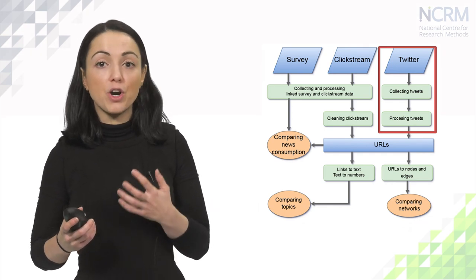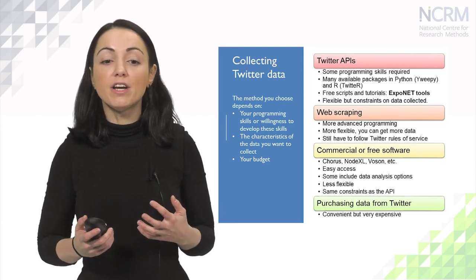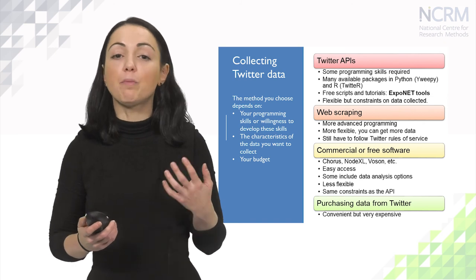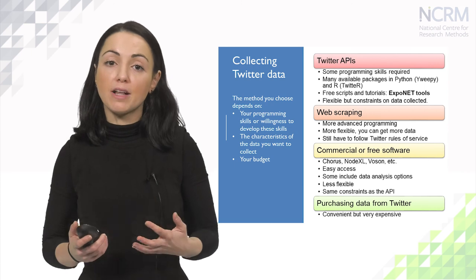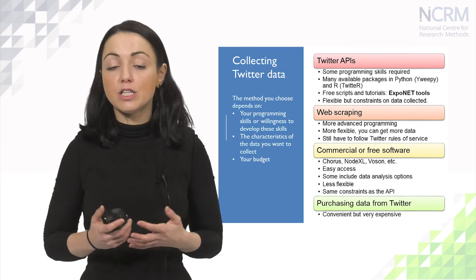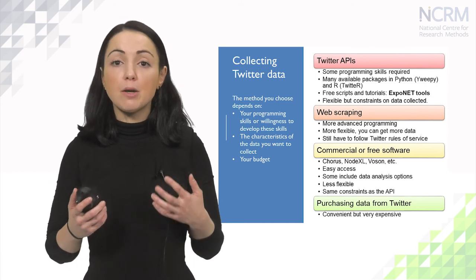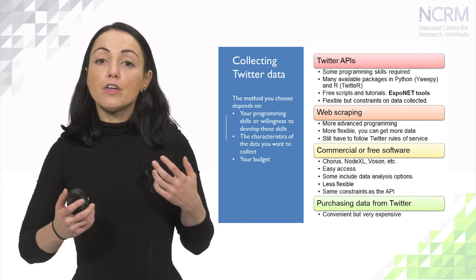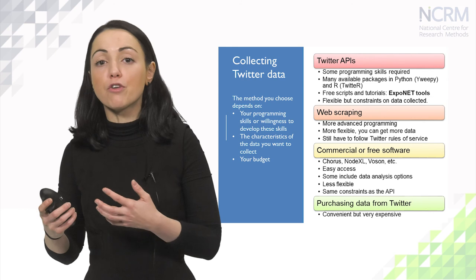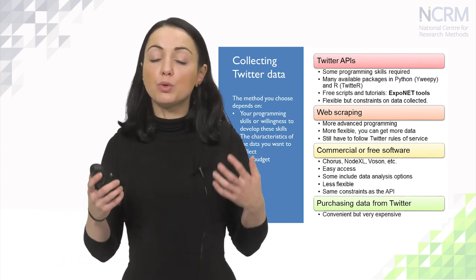The next type of data we work with is Twitter data. There are multiple methods for collecting it, and choosing one depends on your programming skills, the characteristics of the data you are trying to collect, and your budget. The most popular method among researchers is using the Twitter APIs, which requires some programming skills, but there are many packages in Python and R available. There are also free scripts and tutorials available online, and the Exponet team at the University of Exeter has made available notebooks and tutorials on their GitHub page and blog on how to collect and download Twitter data.